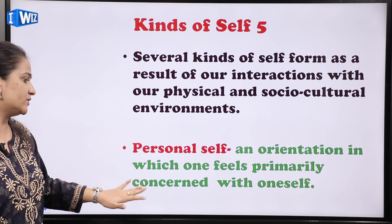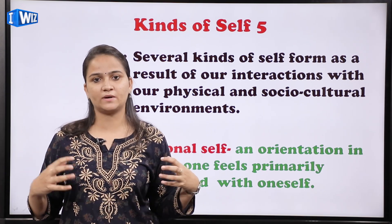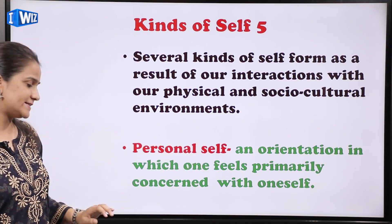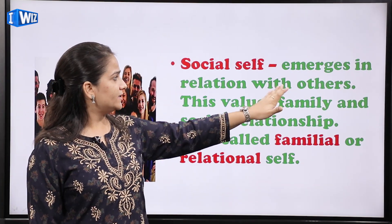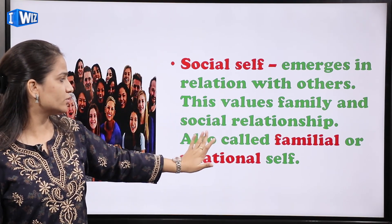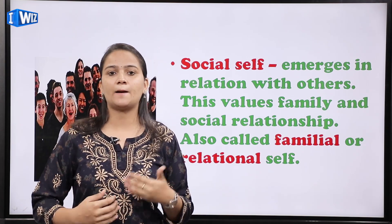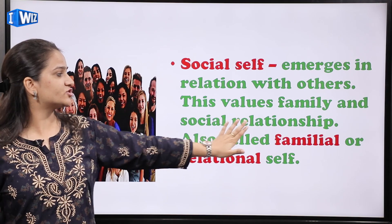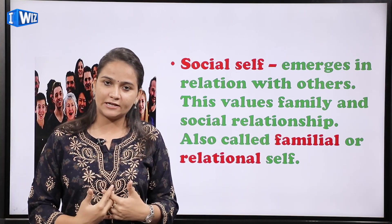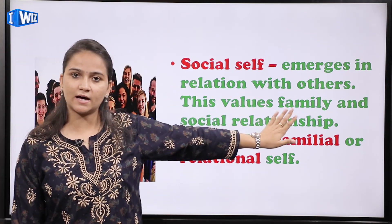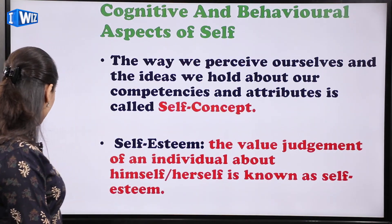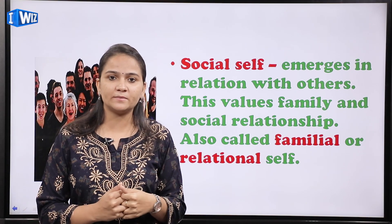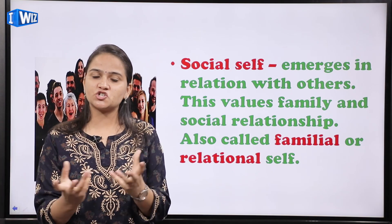पहला है personal self — an orientation in which one feels primarily concerned with oneself। यानि मेरा personal self सिर्फ मेरे बारे में है — मेरा interest, मेरी family, मेरे बारे में जो भी सोचूंगी, वो मेरे self-interest का हिस्सा होगा। Second है social self — this emerges in relation with others and values family and social relationships। आपका friend circle, family, dancing group — आपके जितने भी groups का आप पार्ट हैं, वो आपके social self का हिस्सा है। This can also be called familial or relational self।